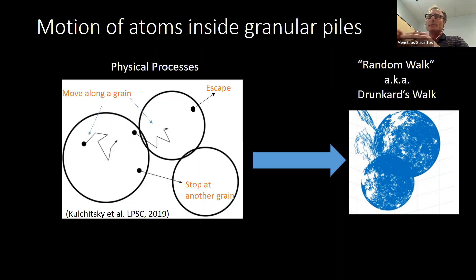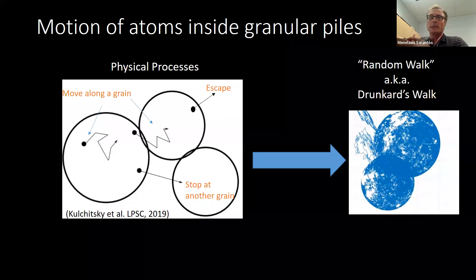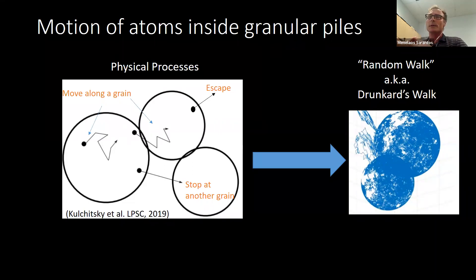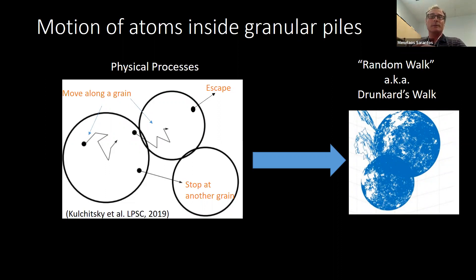Some of the physical processes that we have to track to understand in detail the motion of atoms inside this grain pile before they escape to vacuum are shown in this graphic. One type of event is when atoms desorb and escape to vacuum from the surface of the grain. Another event is desorbing but intercepting another grain that lies between the atom and the vacuum — in technical terms, that's called Knudsen diffusion. Yet another elementary event is for the atom to move along the grain from site to site, which is called surface diffusion.